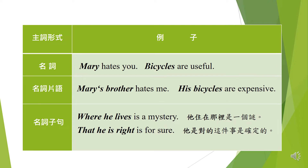第三種是名詞子句。Where he lives is a mystery，where he lives 是由從屬連接詞引導出來的名詞子句，當作全句的主詞，is 是動詞，a mystery 是補語。第二個例子：That he is right is for sure，that he is right 是由從屬連接詞 that 引導出來的名詞子句，當作這個句子的主詞。